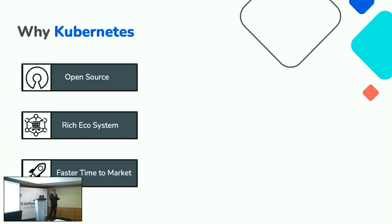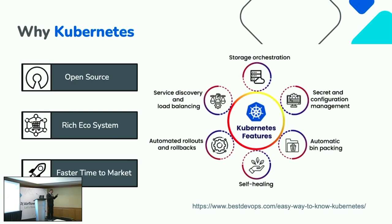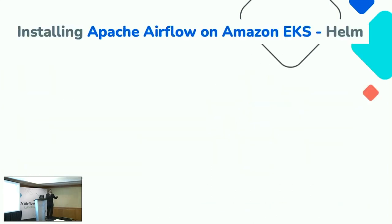Kubernetes has a rich ecosystem and faster time to market because it is portable — you can package your Apache Airflow instance and deploy it to any server. It includes secrets and configuration management, self-healing features, deployment service history, and more. So now you know why and how to deploy on Kubernetes. Let me walk you through what the installation steps look like.